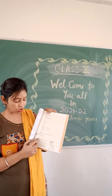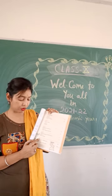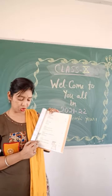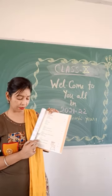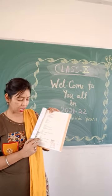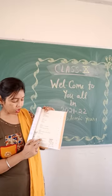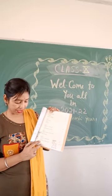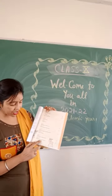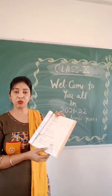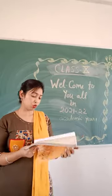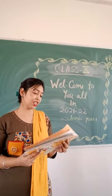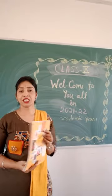The last unit, Unit 4, also has two chapters: Chapter 7 is 'Outcomes of Democracy,' and Chapter 8 is 'Challenges to Democracy.' So in total, eight chapters we will study in the Political Science book.